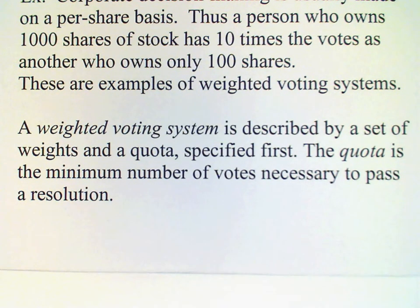In general, a weighted voting system can be specified with two things. First, we need a set of weights, which corresponds to the number of votes for each voter. And a quota, which tells us the minimum number of votes needed to pass a resolution.